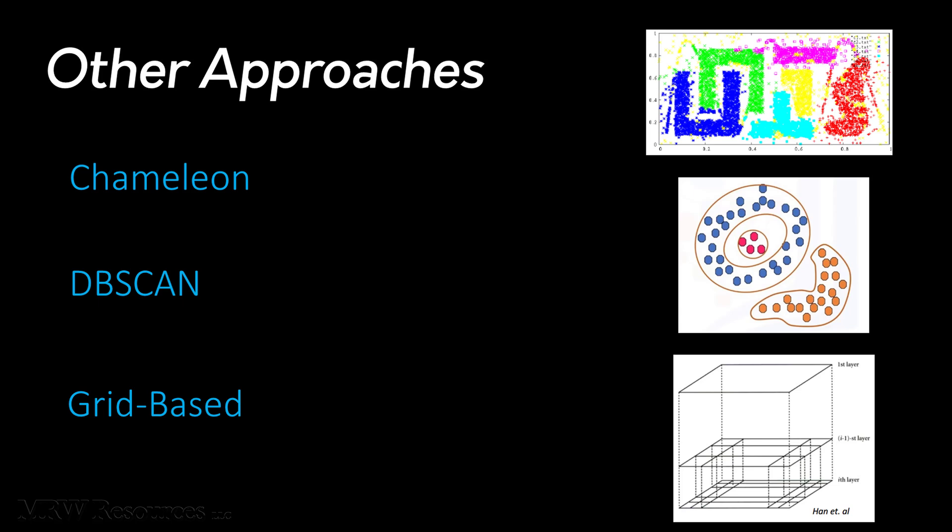DBSCAN takes the approach that it continues to grow given clusters as long as the density, the number of objects or data points in the cluster or in the neighborhood exceeds some kind of threshold.